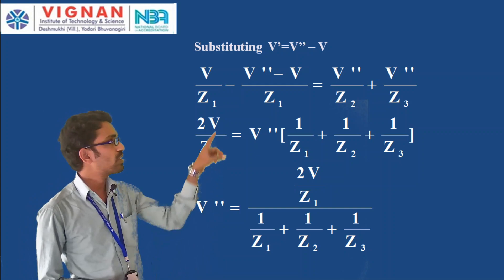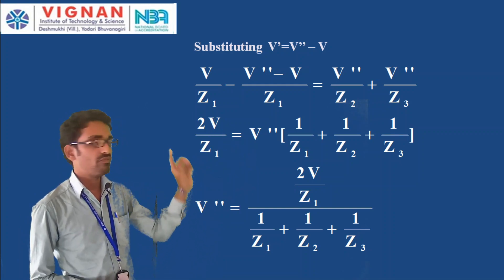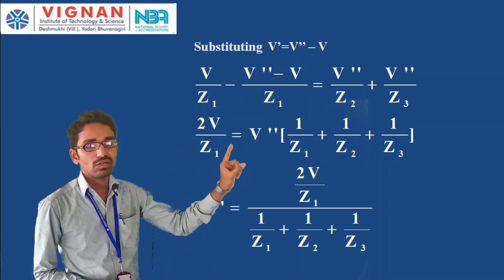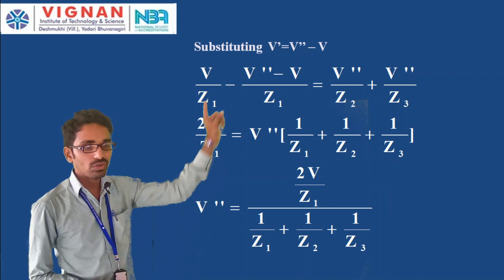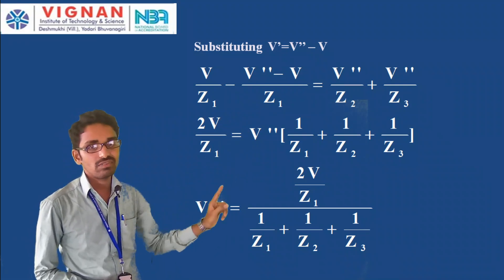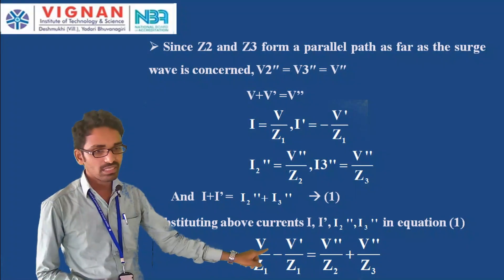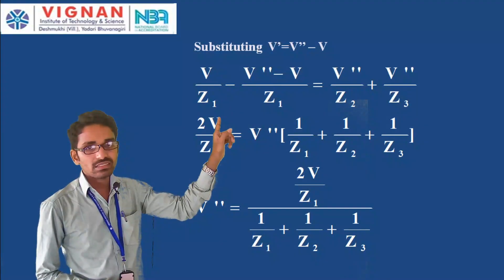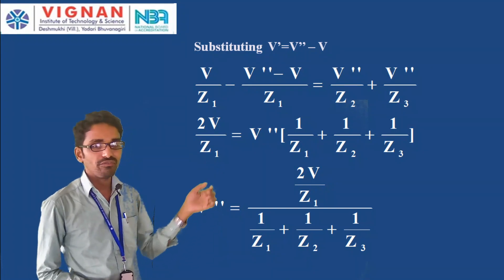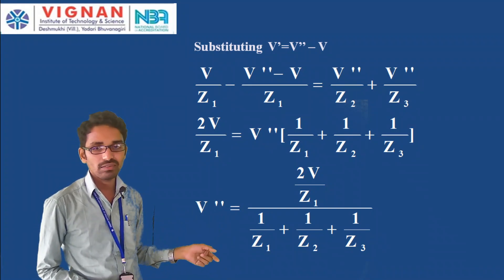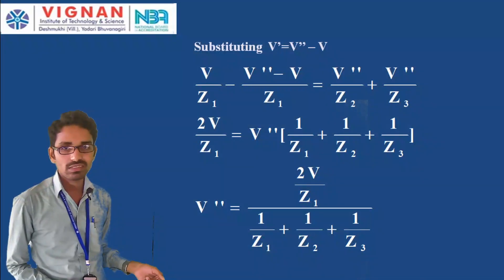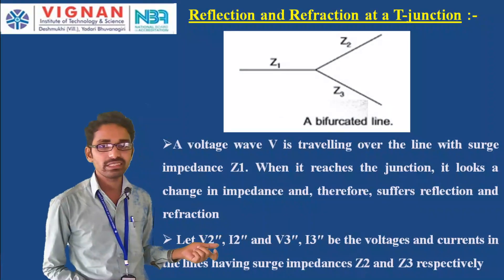Substituting V' = V'' − V and solving the resulting equation, we get the refracted voltage at the T-junction: V'' = 2V/Z₁ divided by (1/Z₁ + 1/Z₂ + 1/Z₃). That is the refracted voltage at the T-junction.